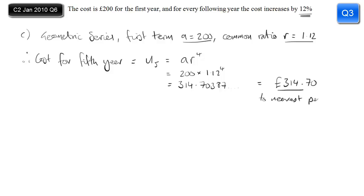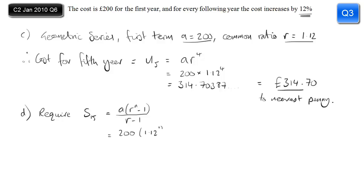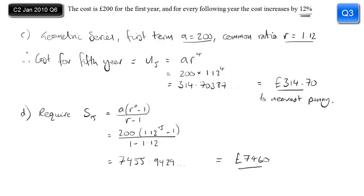Part d: the total cost for the first 15 years is the sum of the first 15 terms of this series. We use the standard sum formula, substitute in a, r, and n. It really comes down to whether you can do this on your calculator, so as long as you're familiar with it and have practised this type of formula it shouldn't be any problem. It doesn't state the required accuracy so round to three significant figures.